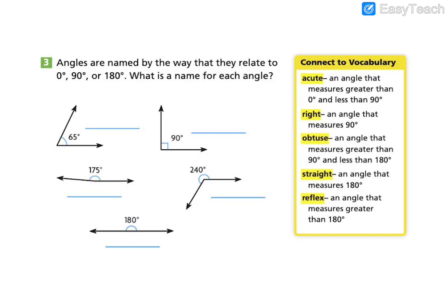So let's go ahead and take a look now at this question. Here we're looking at angles that are already given to us with a certain number of degrees. Angles are named by the way they relate to zero, 90, or 180 degrees. What is a name for each of the angles?